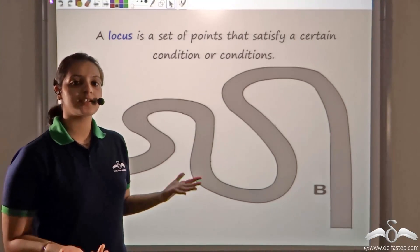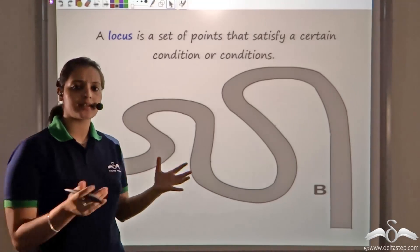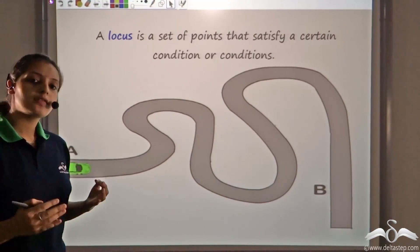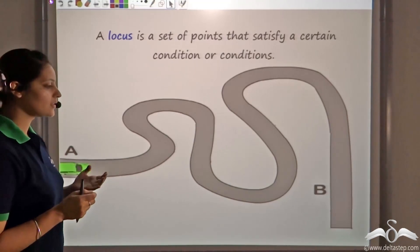Locus is a set of points which satisfy a certain condition. Now you can actually consider it as a bunch of points all doing the same thing. All of us have already encountered the idea of locus. Let us look at this.